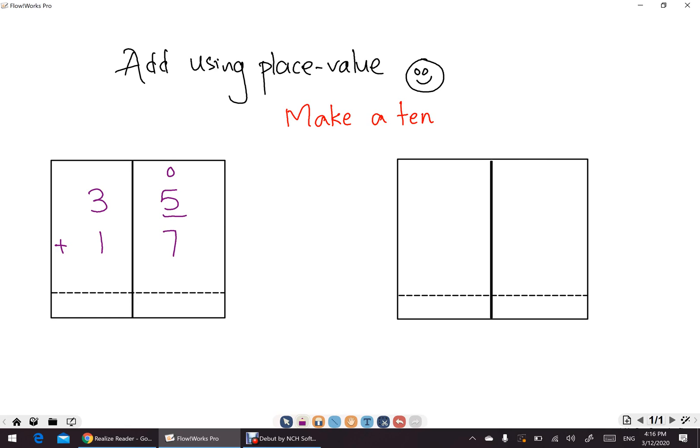Here, as you can see, we will add two-digit numbers using place value method. As we know, in this number 35 and 17, number 35, 5 is in 1's place and 3 is in 10's place. 7 is in 1's place and 1 is in 10's place.